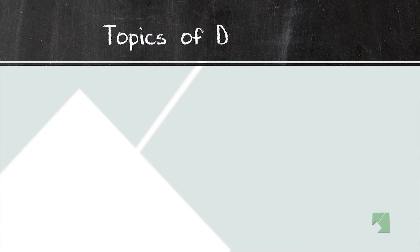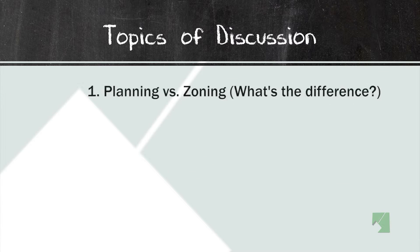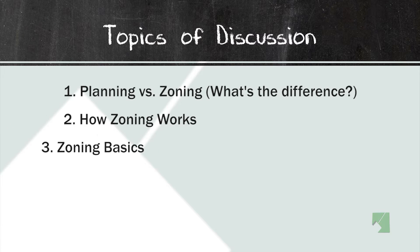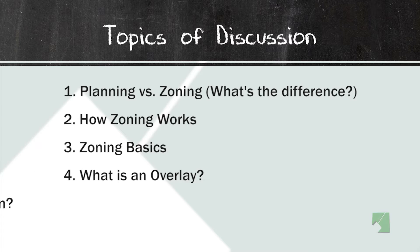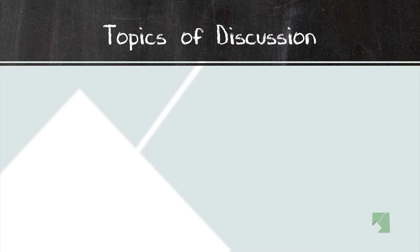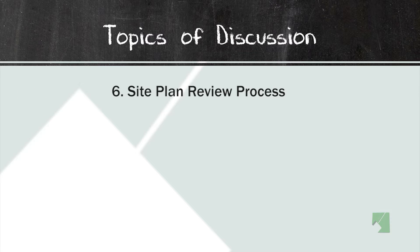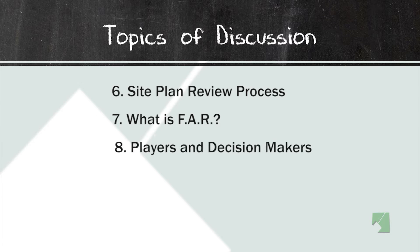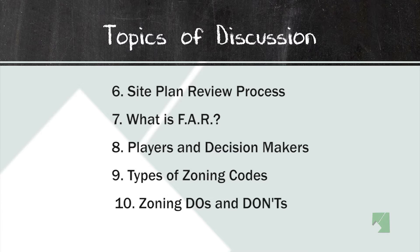We are going to get started with our topics of discussion. We're going to talk about planning versus zoning — what's the difference. We're going to tell you how zoning works, go over the zoning basics, what an overlay zone and a site plan is, the site plan review process in Prince George's County, what is FAR — floor area ratio — the players and decision makers, and the types of zoning codes and zoning do's and don'ts.